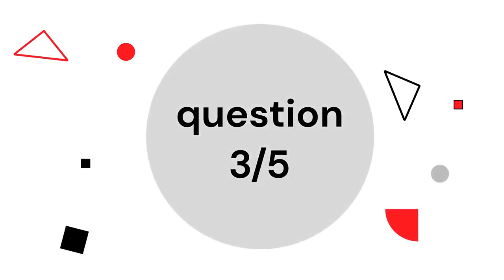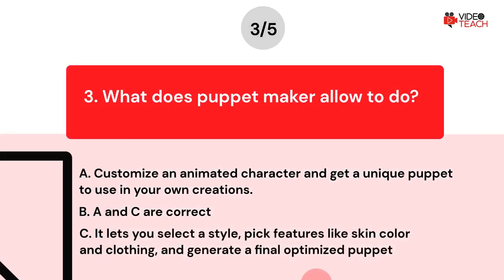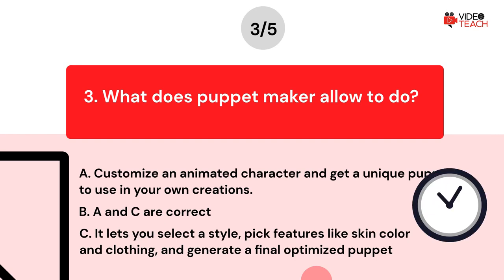Question number three. What does Puppet Maker allow you to do? Option A: Customize an animated character and get a unique puppet to use in your own creations. Option B: A and C are correct. Option C: It lets you select a style, pick features like skin color and clothing, and generate a final optimized puppet. Now you have about 15 seconds to think about your answer.